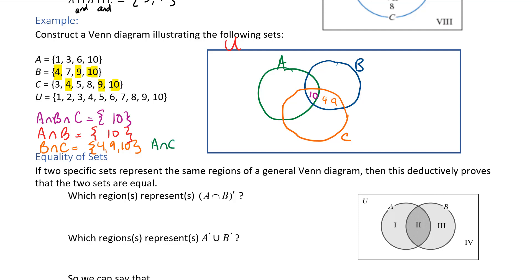For A intersect C: looking at those lists, 3 and 10 are common between A and C. Since 10 is already placed, I put 3 in the region that is between A and C but not in B. That takes care of every pairwise intersection.